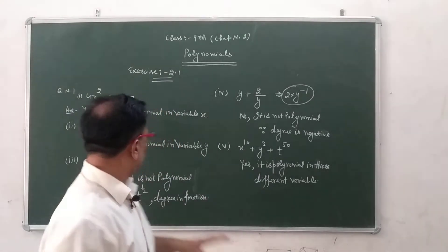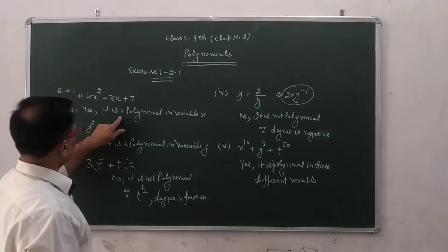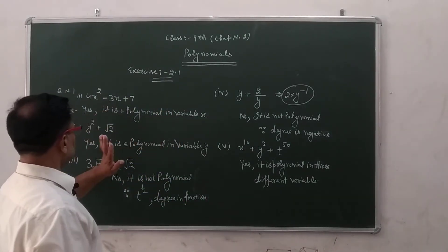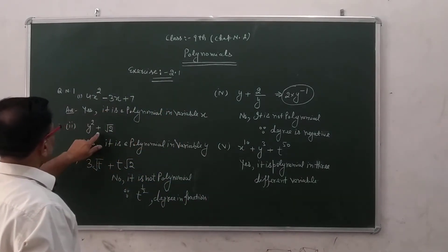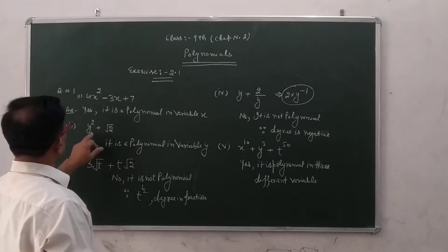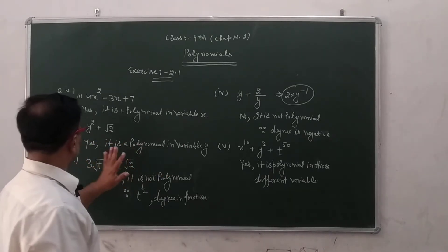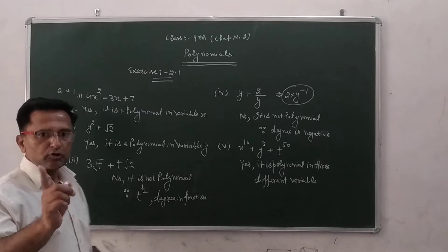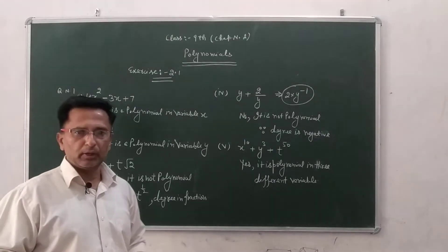So, the first expression is a polynomial in variable x. The second is also a polynomial in variable y. The third is not a polynomial.